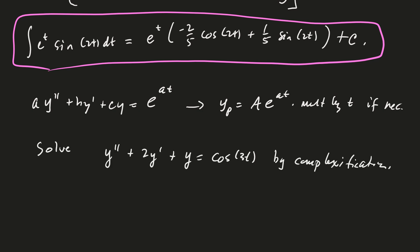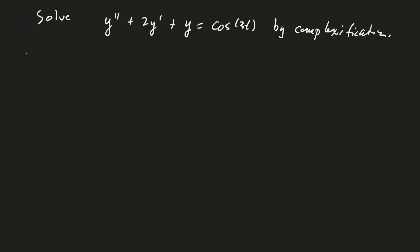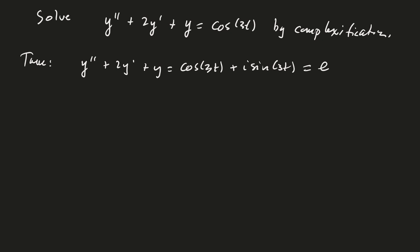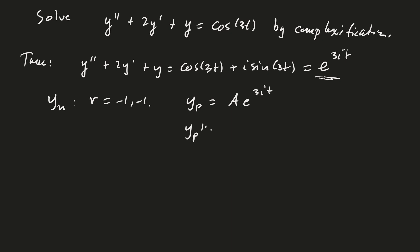Here's the differential equation to solve: y'' + 2y' + y = cos(3t), using complexification. We take the larger problem: y'' + 2y' + y = cos(3t) + i·sin(3t), which equals e^(3it) — we've now complexified the problem. The characteristic roots are r = -1, -1, so no overlap with the homogeneous solution. We guess a particular solution y_p = A·e^(3it). Differentiating: y_p' = 3iA·e^(3it) and y_p'' = (3i)²·A·e^(3it) = -9A·e^(3it).